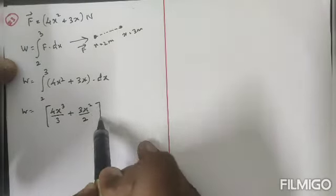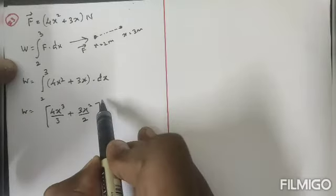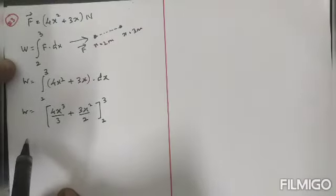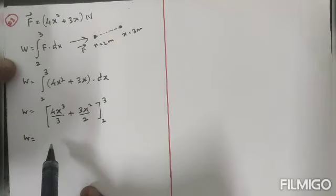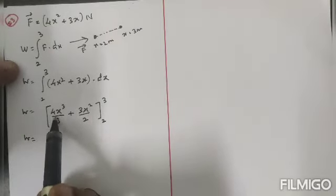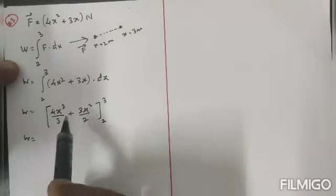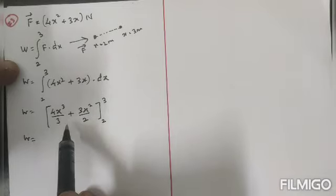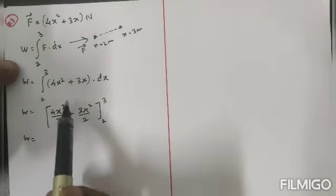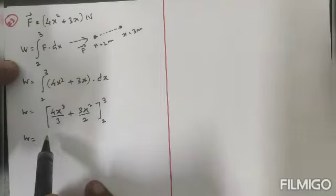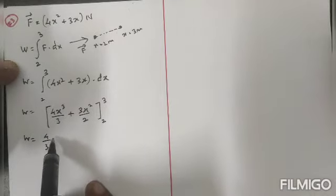Okay, so then upper limit and lower limit we can write 2 and 3. Therefore work done is equal to here 4/3, so individually I am going to apply.